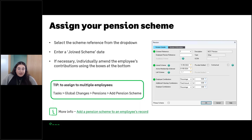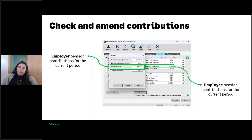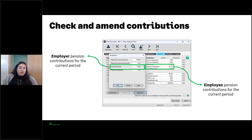Just a reminder: you can find all the information from the slides by downloading the handout using the paper icon on the webinar control panel. That brings us to the last section of the webinar — checking those pension contributions and how to amend them if necessary. I have two pension schemes and the way you view the employee and employer contributions is slightly different for each, but you will see both of them in Enter Payments. You also have the option of amending an employee's pension contribution — even if other employees are on the same scheme, you can go into an individual's record and amend their contribution if needed.